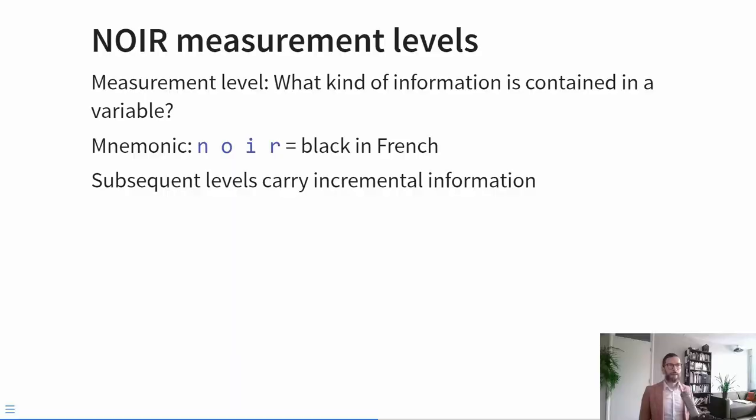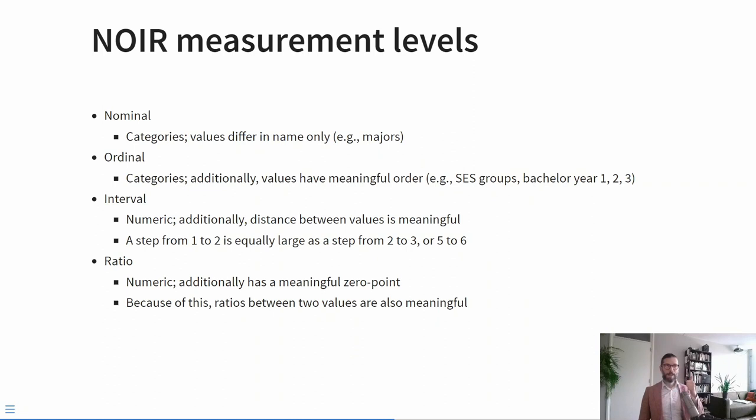Another term we have to define is the measurement level of variables. A measurement level relates to what type of information a variable carries. A convenient acronym to remember the four measurement levels is NOIR — the French word for black. Each level carries more information than all the levels before it. The N stands for nominal: a categorical variable encoding group membership where groups differ only in name. For example, are people from the Netherlands or from abroad, do people have a tattoo or not, do people identify as male, female, or other?